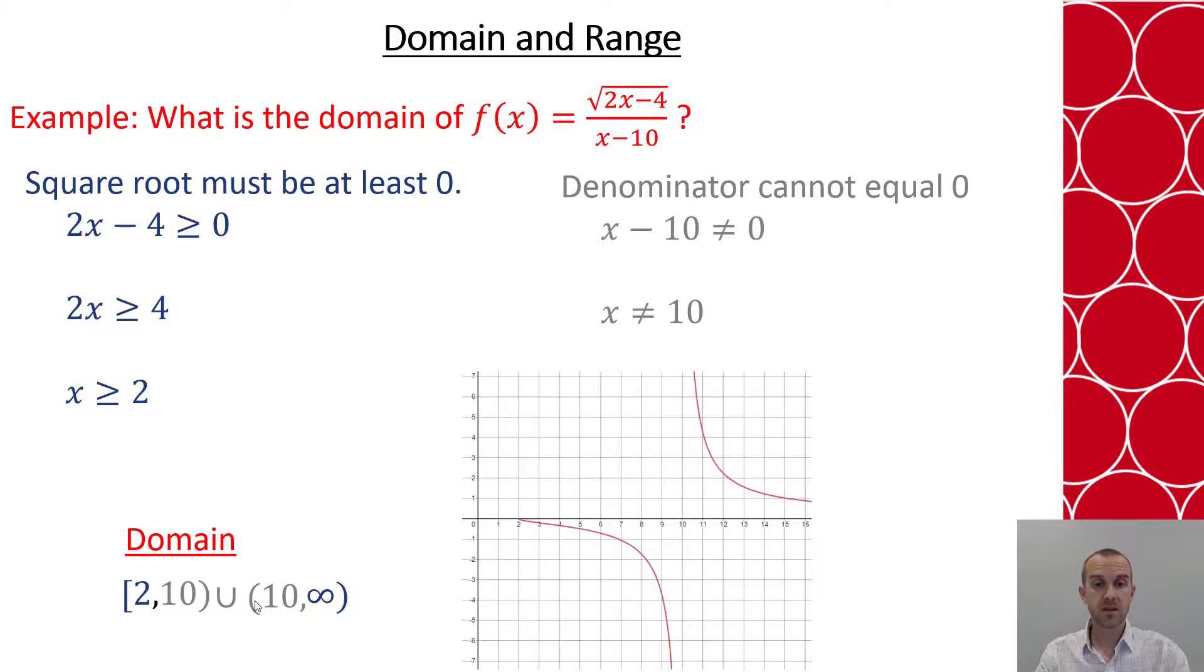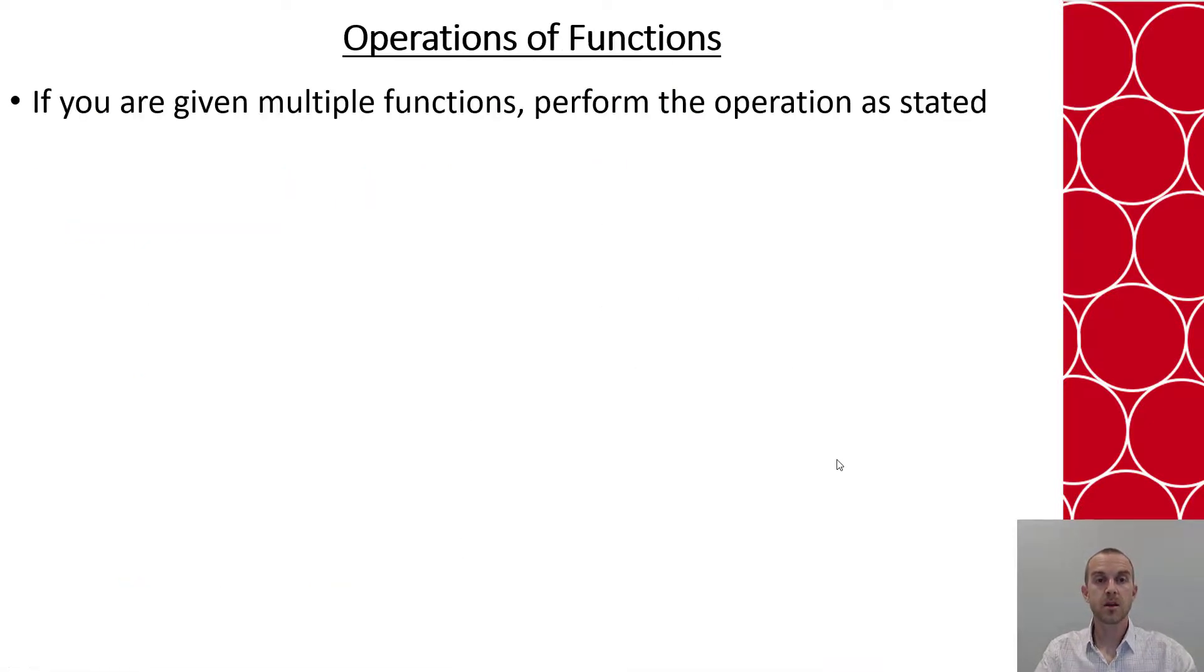If you graph this, this is what the graph would look like. And you can see it starts at 2, it hits an asymptote at 10, and then after 10, it just goes on infinitely.